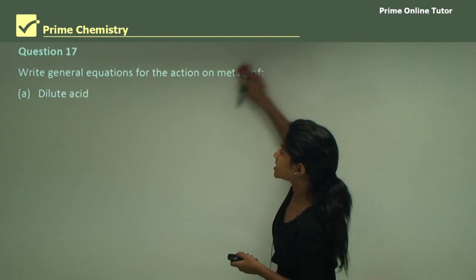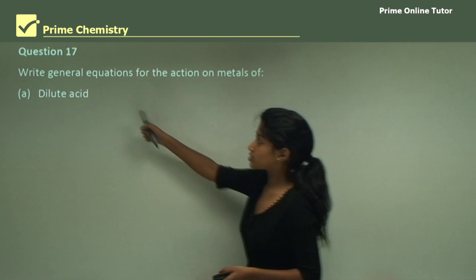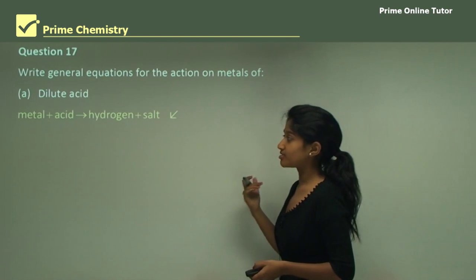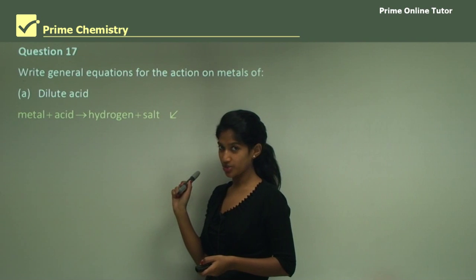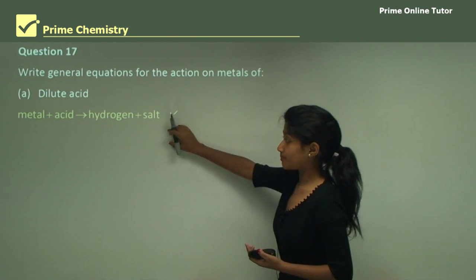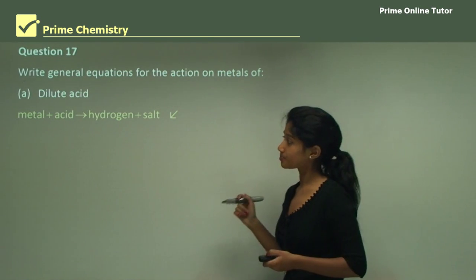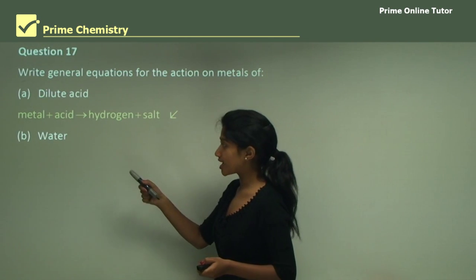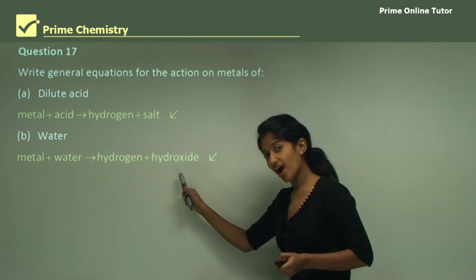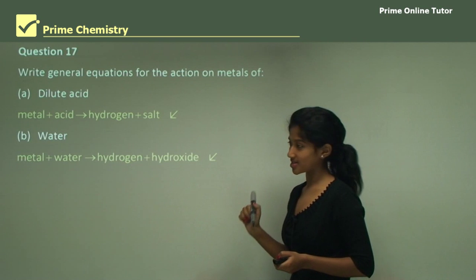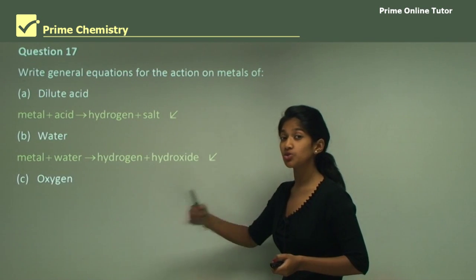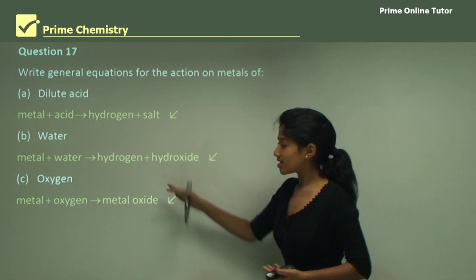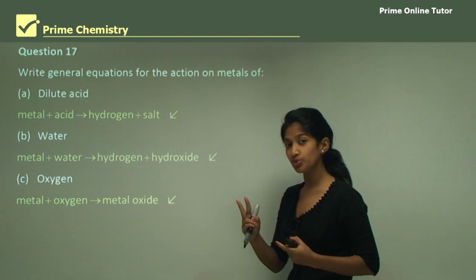Question 17 has three parts. Part one: write a general equation for the action of metals on dilute acid. When a dilute acid reacts with a metal, a salt and hydrogen gas are produced — that is our general equation written in words. Part two is with water: when a metal reacts with water, it forms hydrogen and a metal hydroxide. Part three is with oxygen: when a metal reacts with oxygen, it forms a metal oxide. This is also known as a synthesis reaction because it goes from two reactants to one product.